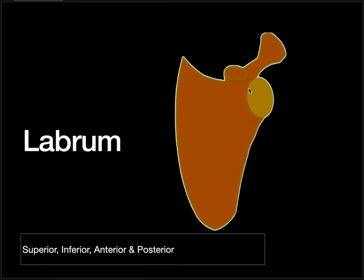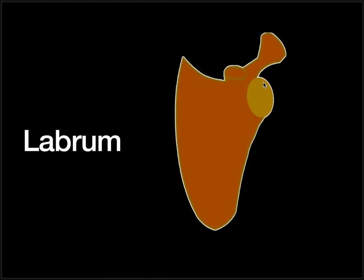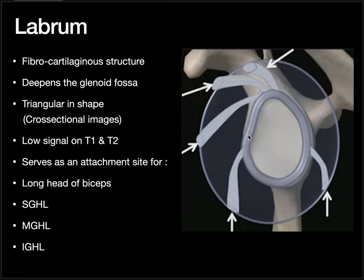Next, coming to the labrum. The glenoid cavity is a very flat structure, but it has to articulate the humeral head, and so to facilitate this, we have a labrum. The main function of the labrum is that it deepens the glenoid cavity so we can better articulate the humeral head within it. The labrum is a fibrocartilaginous structure that deepens the glenoid fossa. It also has attachment for the long head of the biceps on the superior labrum. The superior glenohumeral ligament, middle glenohumeral ligament, and inferior glenohumeral ligament also attach to the labrum.